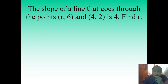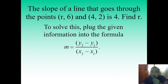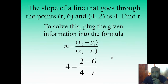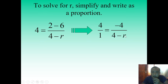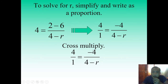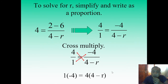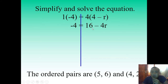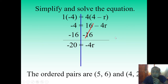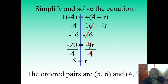Find r if the slope of the line that goes through (r, 6) and (4, 2) is 4. Substitute into the slope formula: m = (2 - 6) / (4 - r) = 4. Apply cross multiplication: 4(4 - r) = -4. By the distributive property: 16 - 4r = -4. Subtract 16 from both sides: -4r = -20. Divide both sides by -4: r = 5. Therefore, the ordered pairs are (5, 6) and (4, 2), which yield a slope of 4.